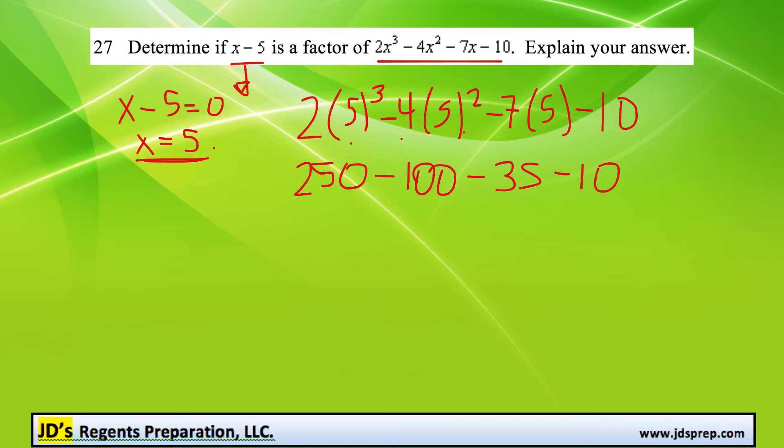Subtracting all that, we get 105. So we did not get 0, so this proves that x minus 5 is not a factor of that polynomial.